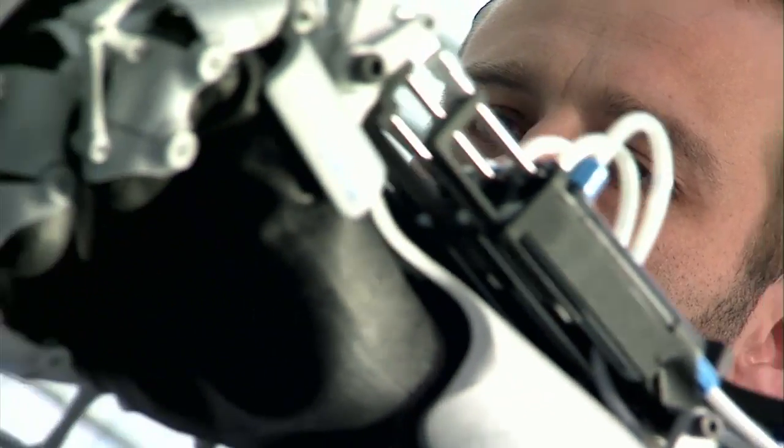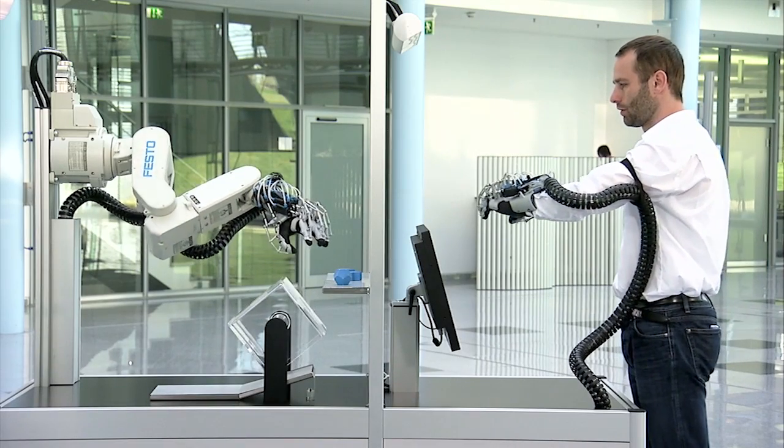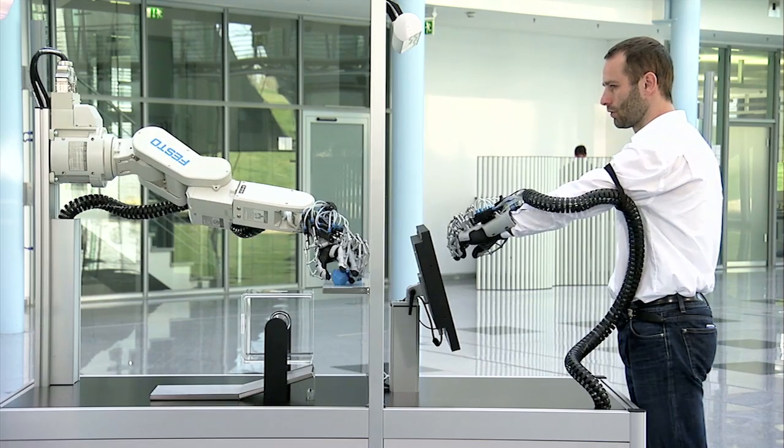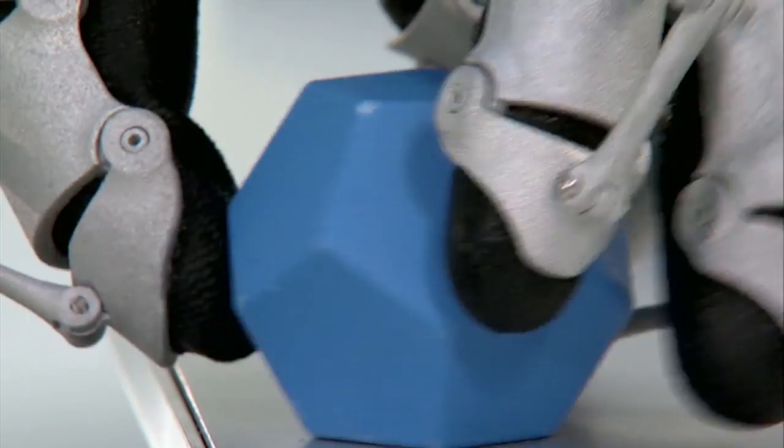And with the ExoHand, Festo shows how humans and machines can work together in the future, especially when it comes to combining the skills of the human operator, their power of perception and decision-making capacity, with the performance of machines.